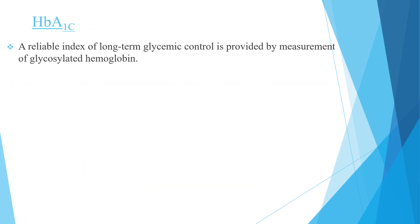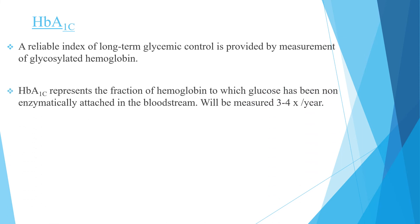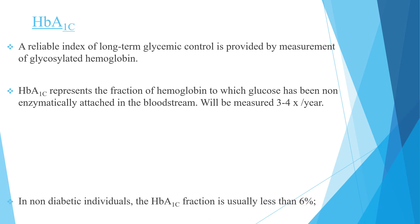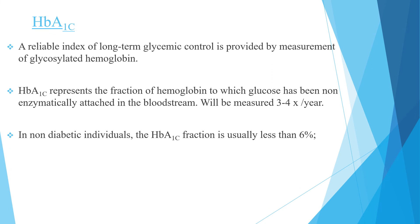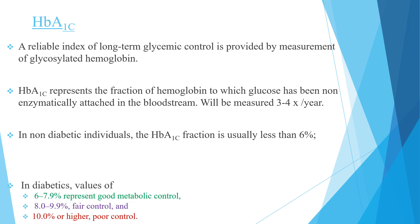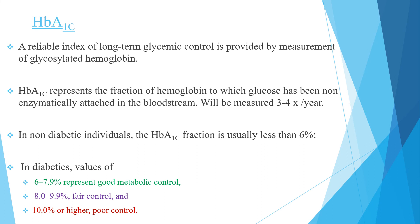HbA1c is a reliable index of long-term glycemic control, measured as glycosylated hemoglobin — the fraction of hemoglobin to which glucose has been non-enzymatically attached in the bloodstream. It is measured 3 to 4 times per year because the half-life of red blood cells is around 120 days. In non-diabetic individuals, HbA1c is usually less than 6%. In diabetes on follow-up: 6 to 7.9% represents good metabolic control, 8 to 9.9% is fair control, and more than 10% is poor control.